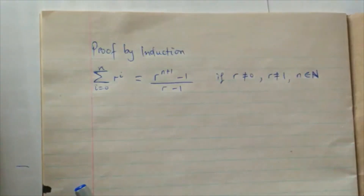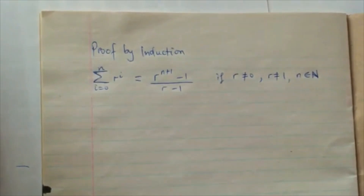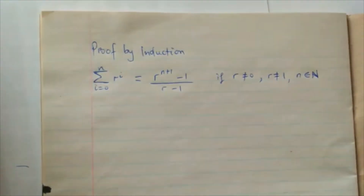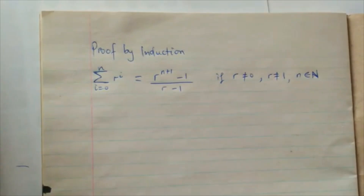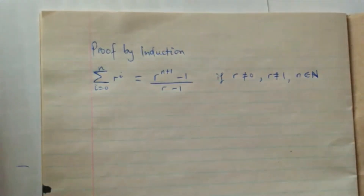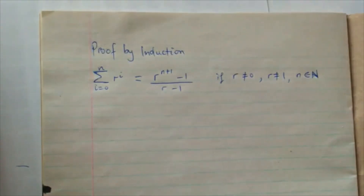Hello guys, today we are on proof by induction, and we want to prove by induction that the summation of r^i from i equals zero to n is equal to r^(n+1) minus one, all over r minus one, given r is not equal to zero, r is not equal to one, and n is an element of natural numbers.